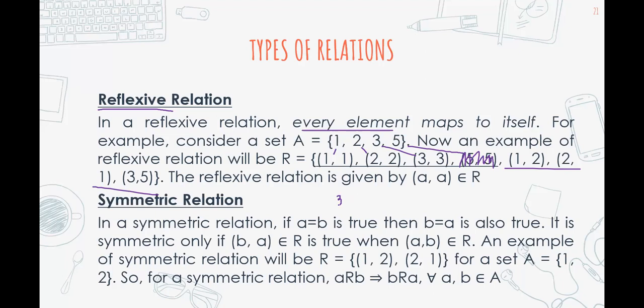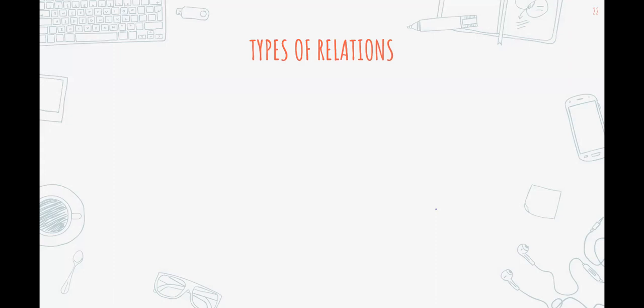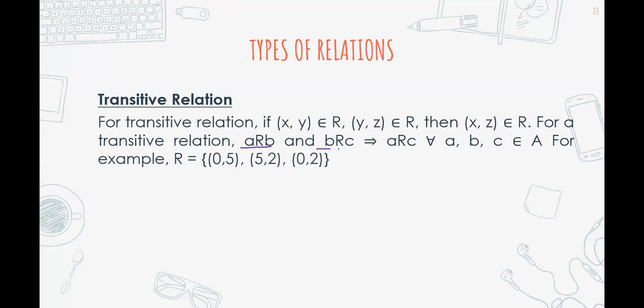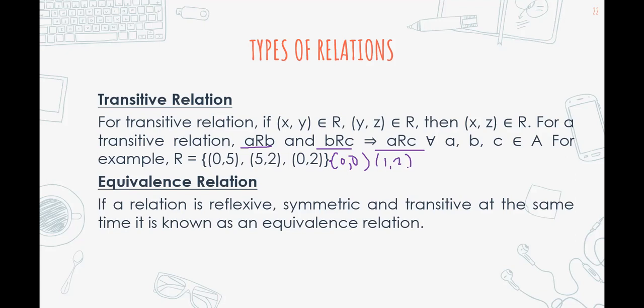Symmetric relation has a reverse. For example, if we have (3,x), it has a reverse or partner which is (x,3). A symmetric relation has a mirror. In transitive, remember the pattern a-b, b-c, a-c. Even if there are other additional items like (0,0) or (1,2), that's okay. It's equivalent if it's reflexive, symmetric, and transitive at the same time.